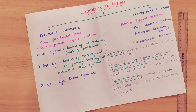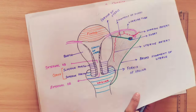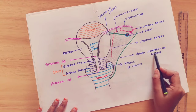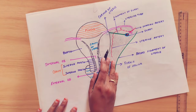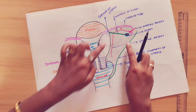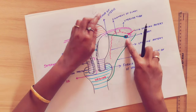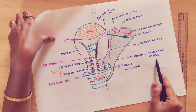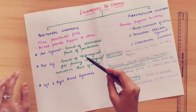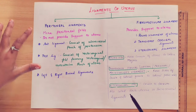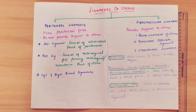The left and right broad ligaments are attached to the lateral wall of the uterus. These are the three ligaments that come under peritoneal ligaments: the anterior ligament, posterior ligament, and left and right broad ligament.